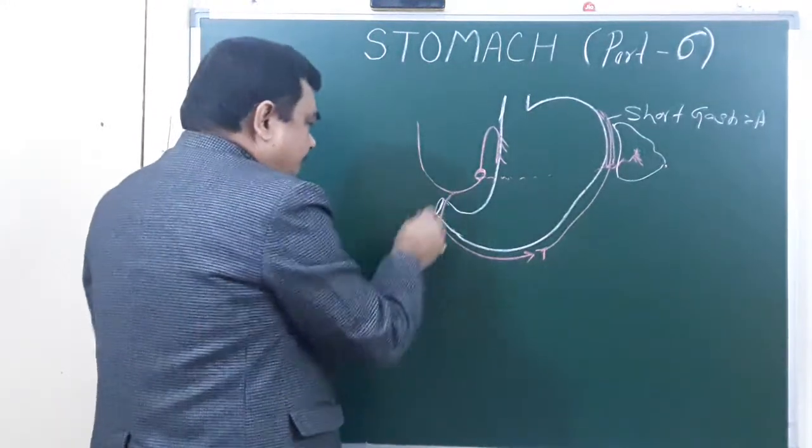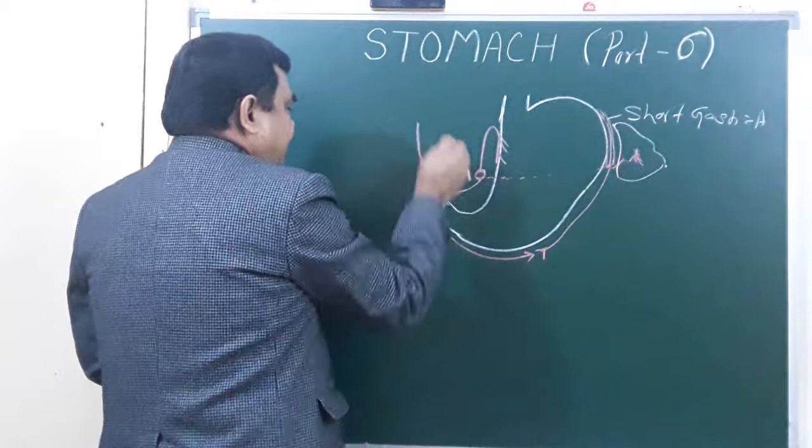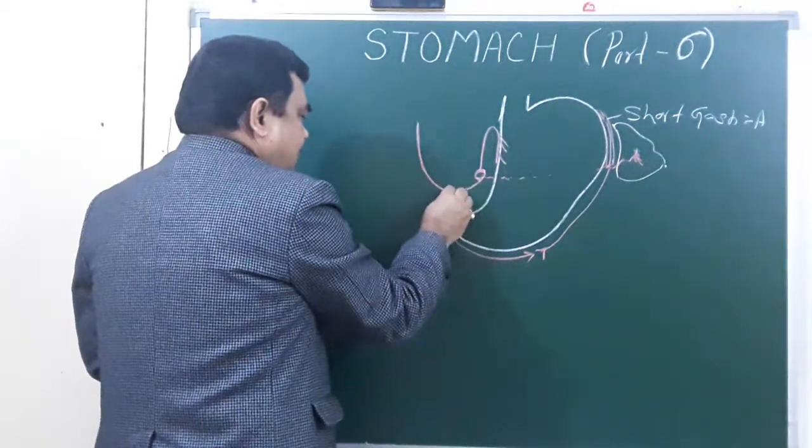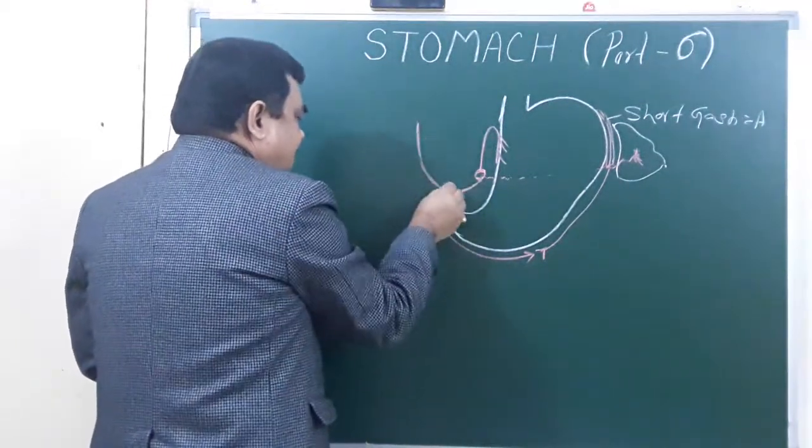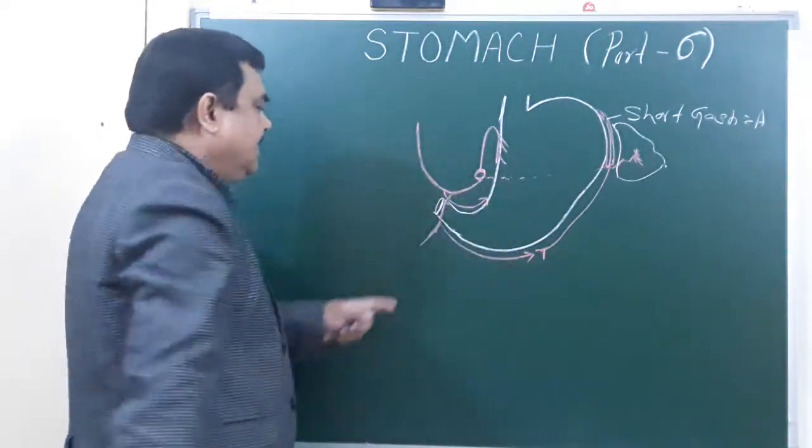And also here, this is the proper hepatic artery. This is the common hepatic. Here it becomes the proper hepatic. It gives the right gastric artery, and this is the right gastric artery.